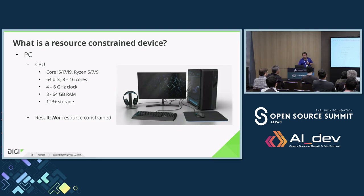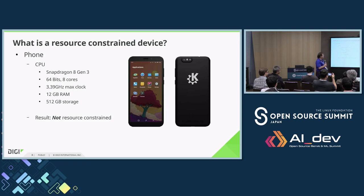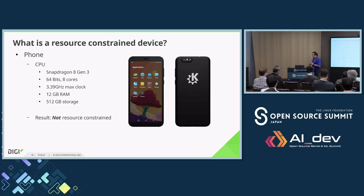Still thinking a bit too big. Everyone's got one of these things - they're little. Those specs are actually from my phone. Your phone may differ, but it's still got 8 cores, 64-bit architecture, 3 and a bit gigahertz, 12 gig of RAM on a phone, and half a terabyte of storage. Not resource constrained. Still thinking too big.